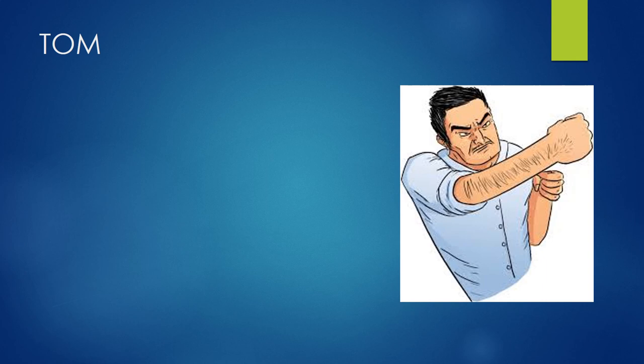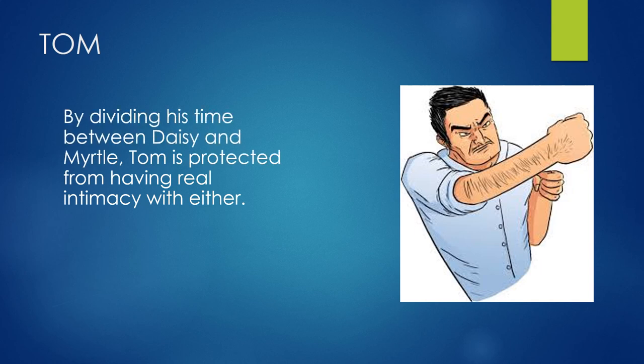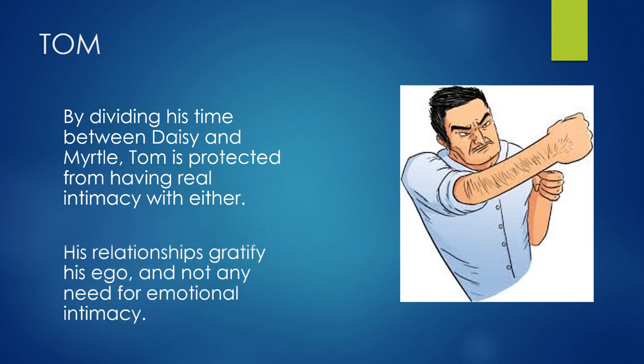Let's begin with Tom. Tom's continuing extramarital affairs are something we are aware of — Jordan becomes aware of them only three months after Tom and Daisy are married, and when we meet Tom he is also having an affair. By dividing his time between two women, Tom is protected from having any real intimacy with either of them. Tom's relationships with women, even his wife, reveal his desire for ego gratification and not any need for personal intimacy.